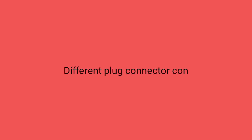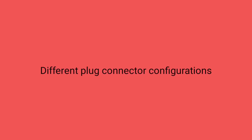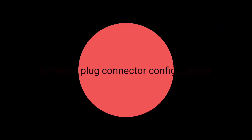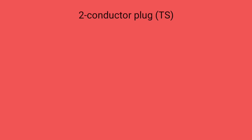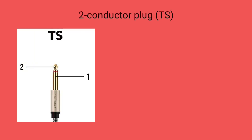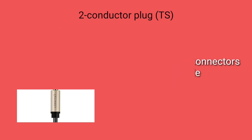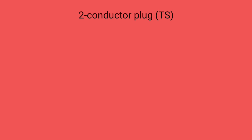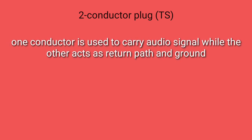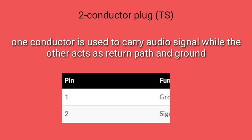Different plug connector configurations. First, the two conductor plug TS. Only tip and sleeve connectors are available. One conductor is used to carry the audio signals, while the other acts as a return path and ground.